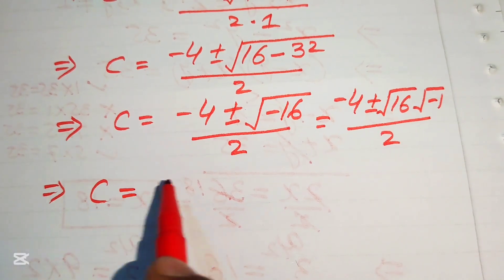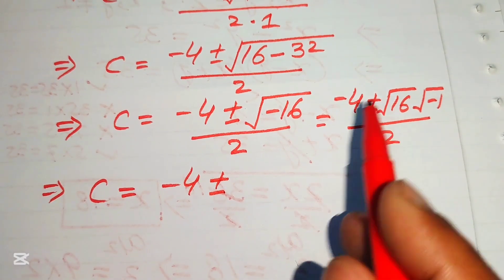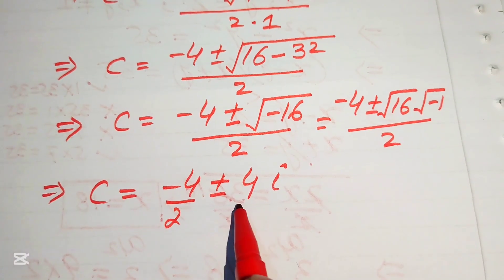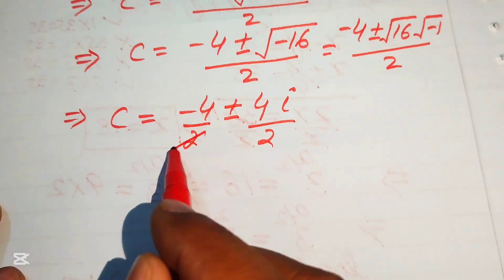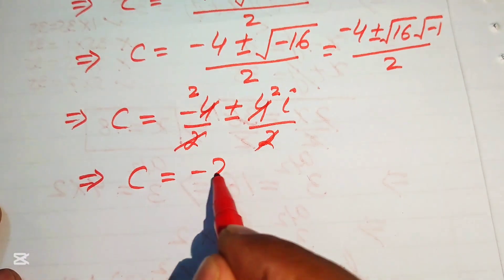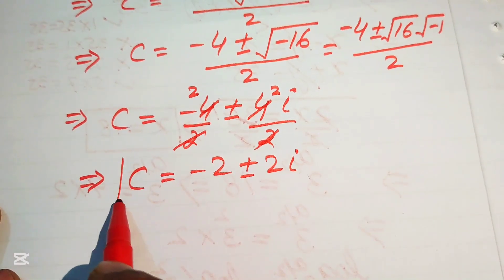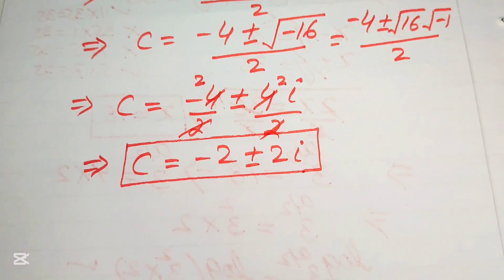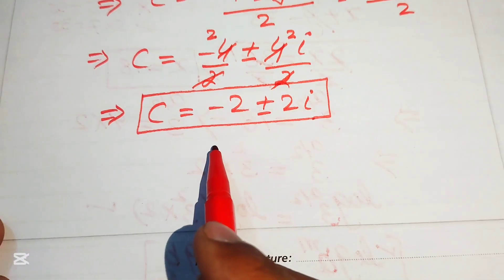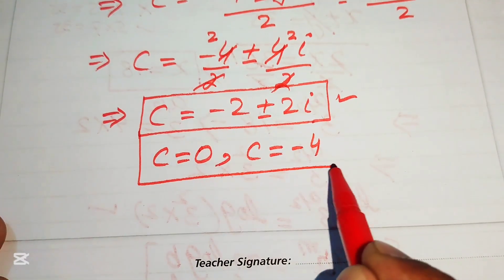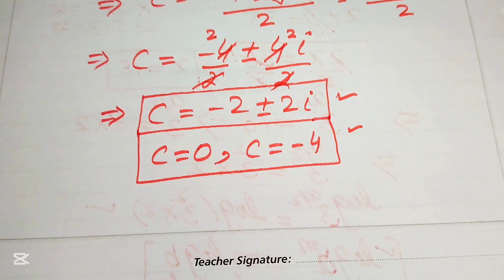Since √16 = 4 and √(-1) = i, we simplify to C = -4/2 ± 4i/2, giving C = -2 ± 2i. These are the two complex roots from equation 2. Therefore, all four roots of the given equation are C = 0, C = -4, C = -2 + 2i, and C = -2 - 2i. Thank you for watching — please subscribe for more videos.